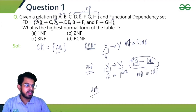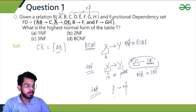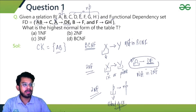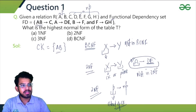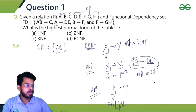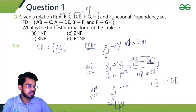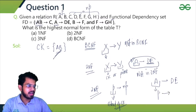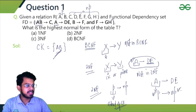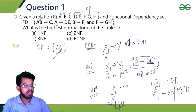Now we'll check 2NF. For 2NF, there must not be any partial dependency — that is, from a prime attribute we should not get a non-prime attribute where that prime attribute is a proper subset of a candidate key. AB is our candidate key and AB itself is not a proper subset, so that FD is fine. But A→DE: A is a proper subset of candidate key AB, and D and E are non-prime attributes. So this is a partial dependency, and the relation is not in 2NF.